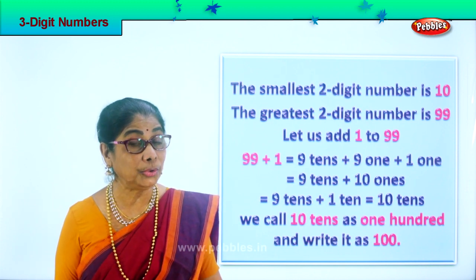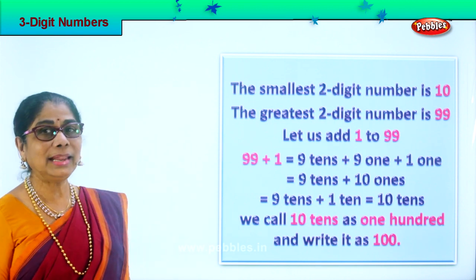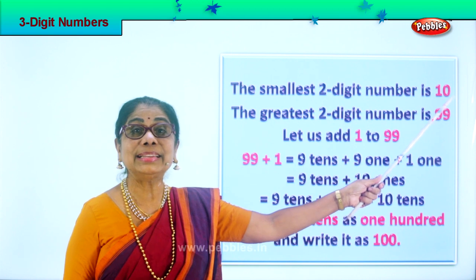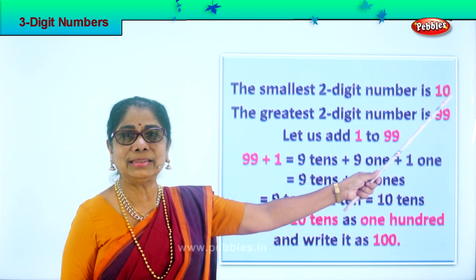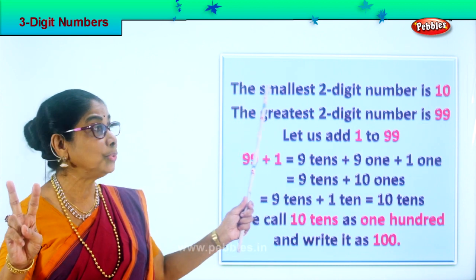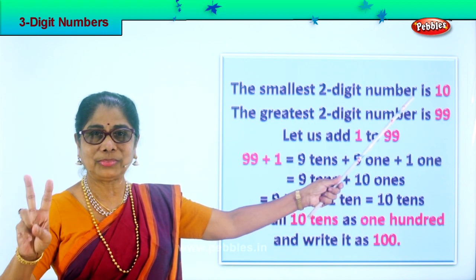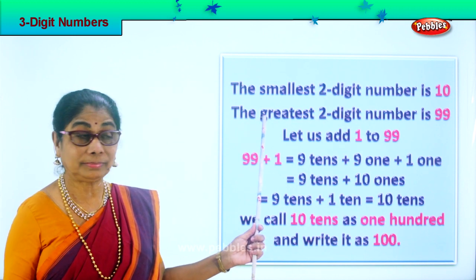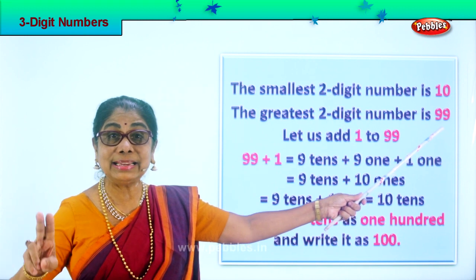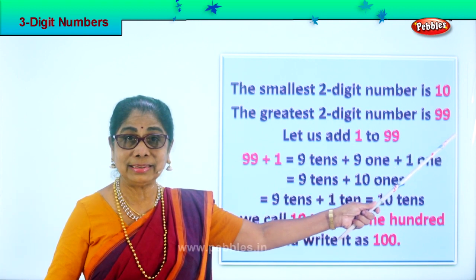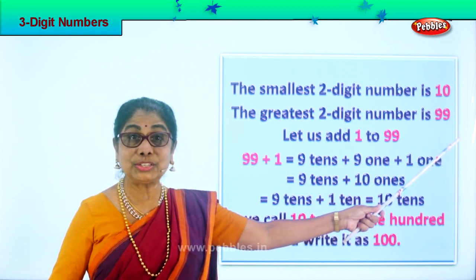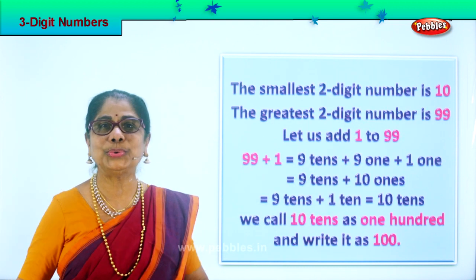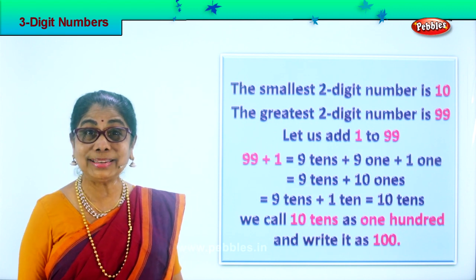We are learning to read two digit numbers. The smallest two digit number is ten — one and zero, ten. The greatest two digit number is ninety-nine — nine and nine, ninety-nine. So ten is the smallest and ninety-nine is the greatest two digit number.